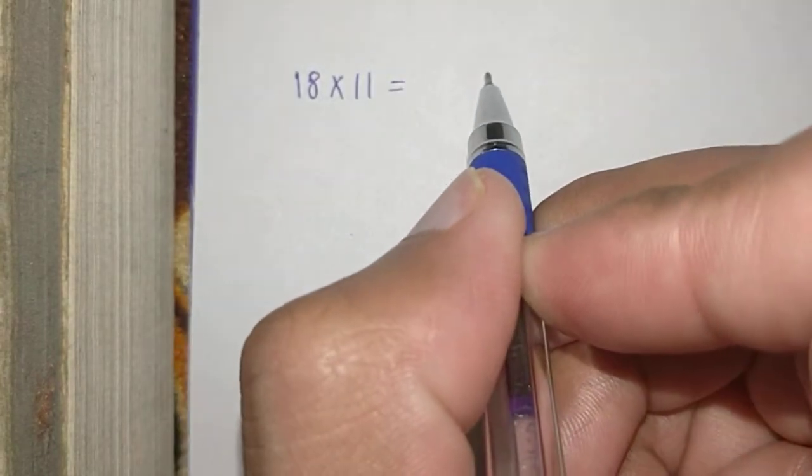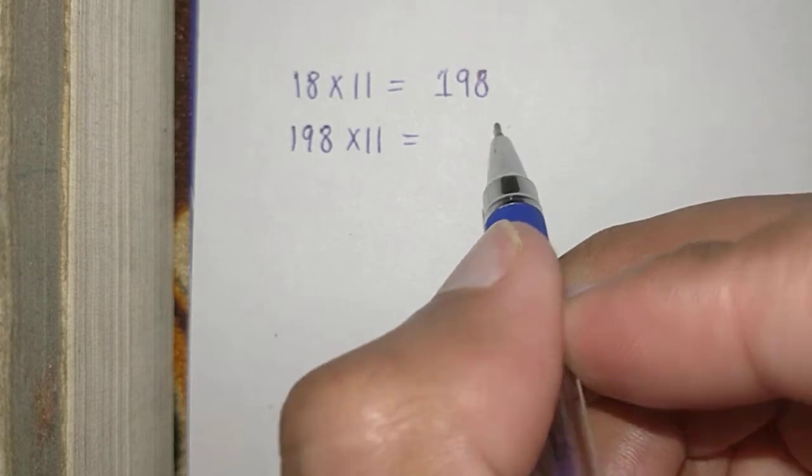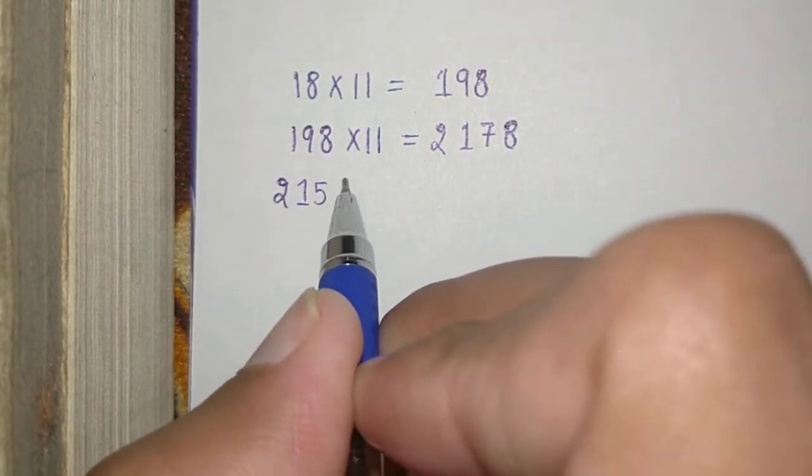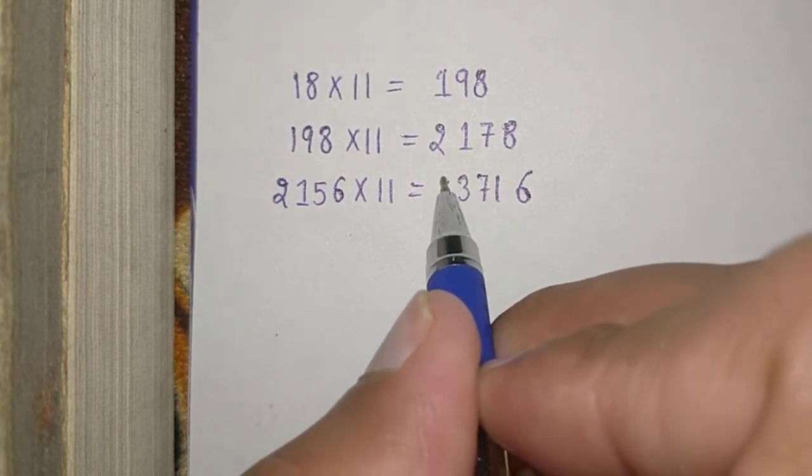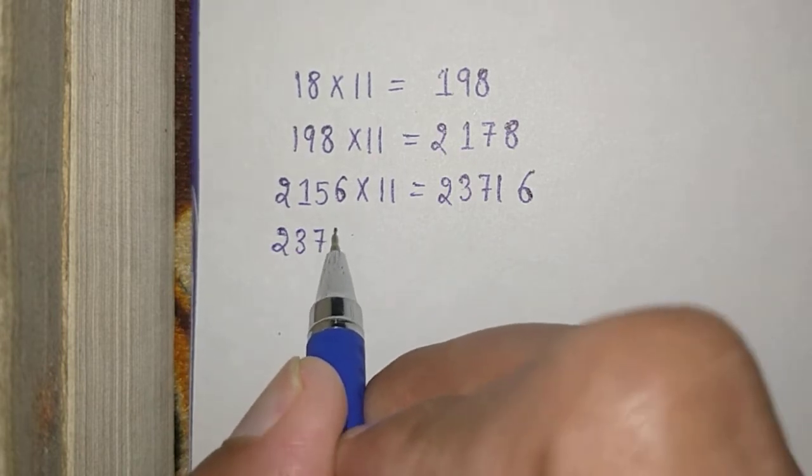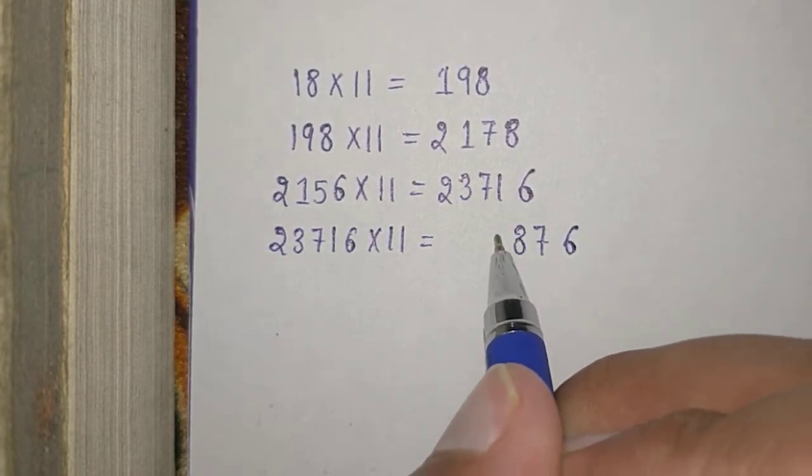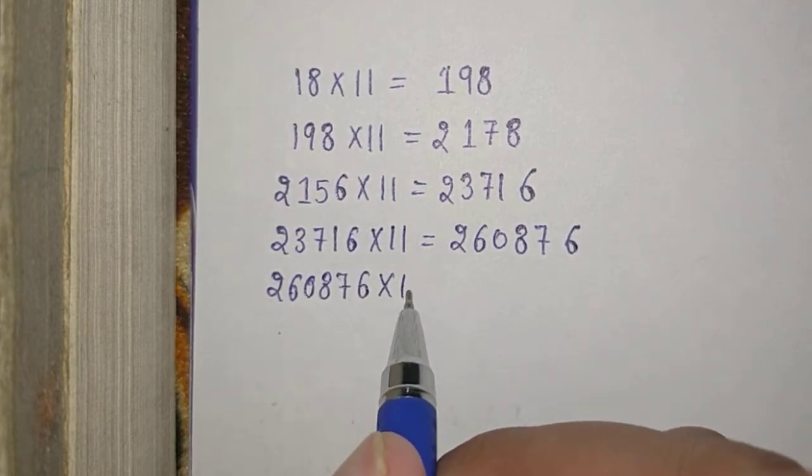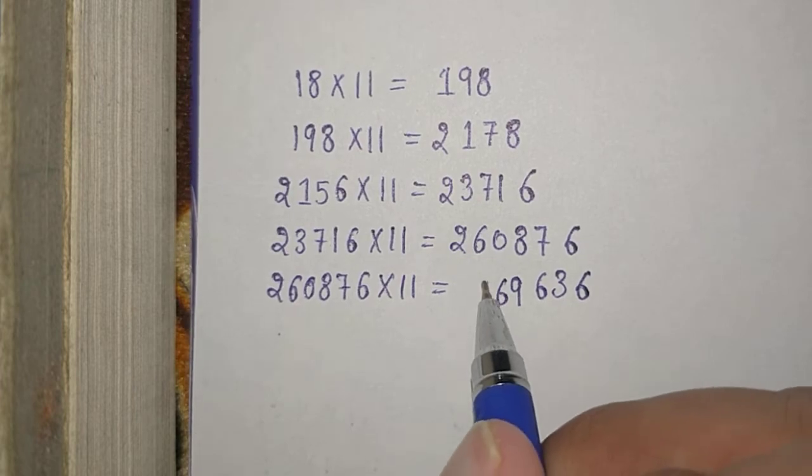18 × 11 is equal to 198. 198 × 11 is equal to 2178. 2156 × 11 is equal to 23716. 23716 × 11 is equal to 260876. 260876 × 11 is equal to 2869636.